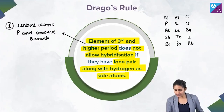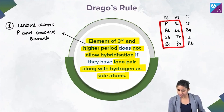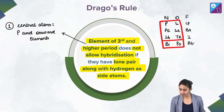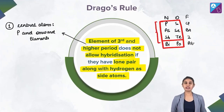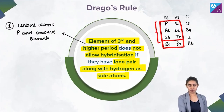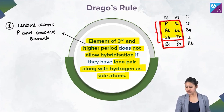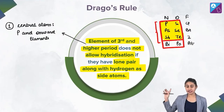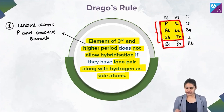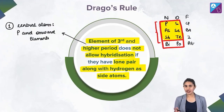Let me narrow it down. We are going to be concerned about only certain elements — excluding radioactive ones. For the NEET syllabus, we restrict ourselves to these specific elements. Phosphorus and onward elements are what we focus on for the NEET examination. The second condition is: does not allow hybridization — when is there no hybridization? When they have a lone pair.